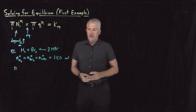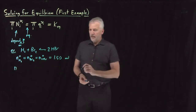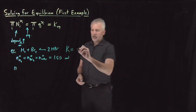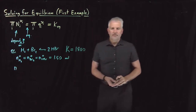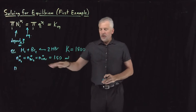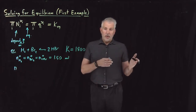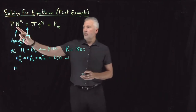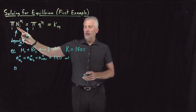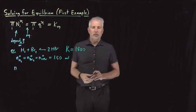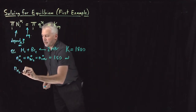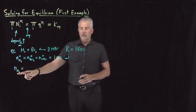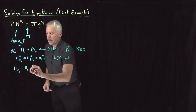Those are my initial amounts. Let me also tell you that we're doing this reaction at a temperature where the equilibrium constant is 1,800. We put these molecules in a container, and the reaction is going to proceed maybe forward, maybe backward. We want to find out how far forward or backward the reaction will proceed until it reaches equilibrium — under which conditions this set of terms equals that equilibrium constant.